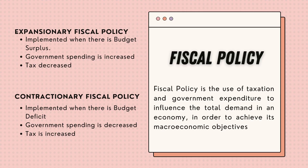Fiscal policy is the use of taxation and government expenditure to influence the total demand in an economy in order to achieve its macroeconomic objectives. There can be expansionary fiscal policy and contractionary fiscal policy. Expansionary fiscal policy is implemented when there is a budget surplus, which means that government revenue is greater than government expenditure. Here, the government spending is increased and tax is decreased.